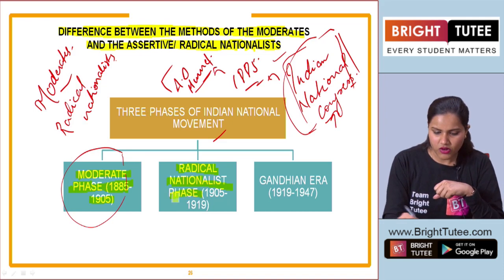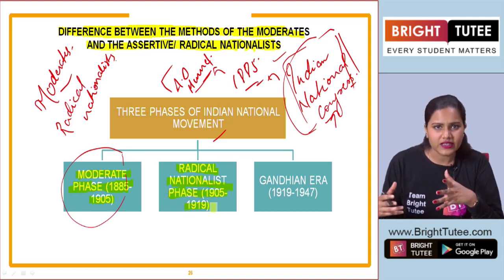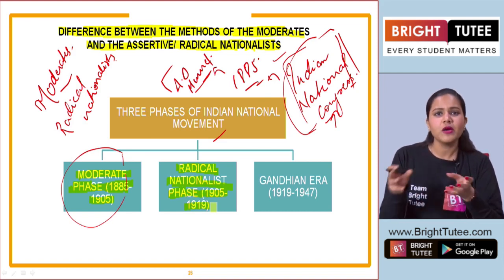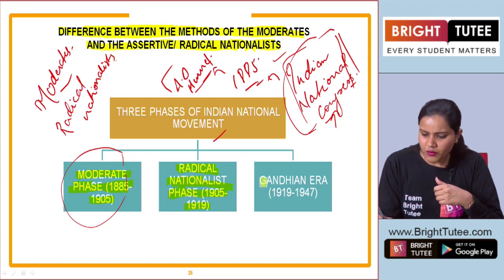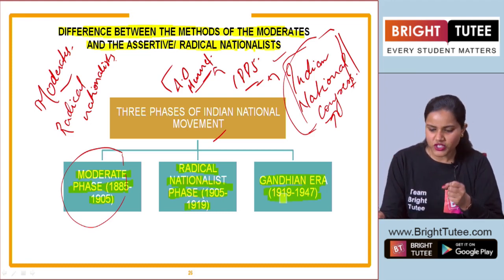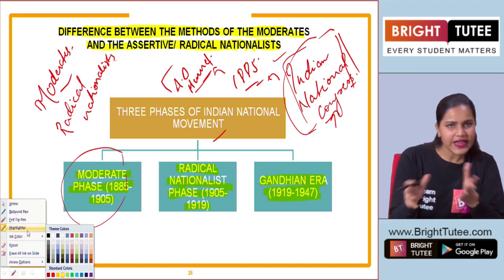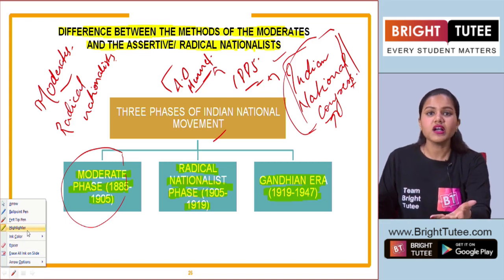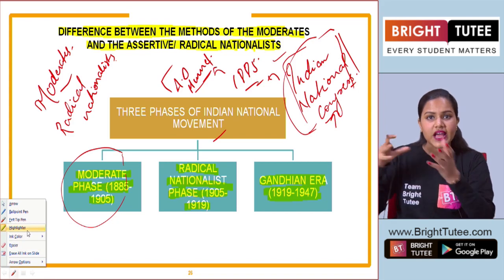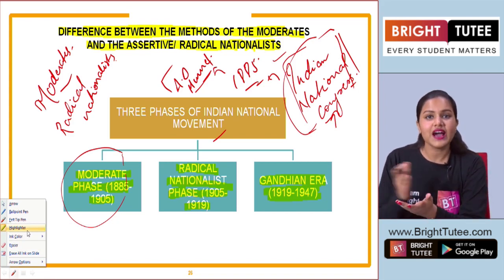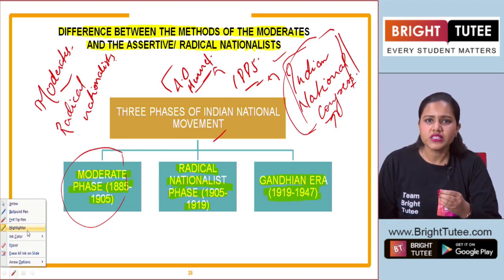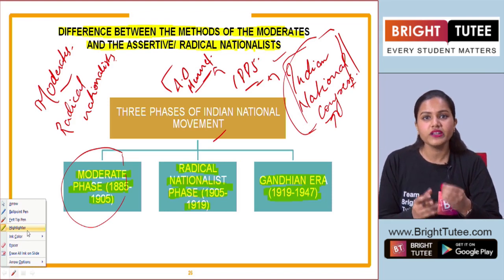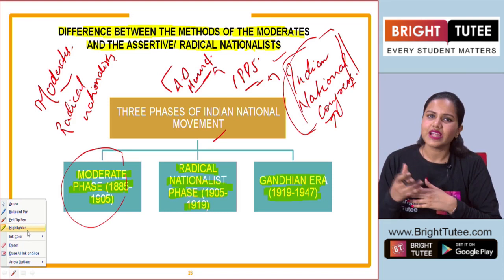The second phase is the radical nationalist or extremist phase, from 1905 to 1919. Then we have the Gandhian era, from 1919 to 1947. Around 1916-1917, when Mahatma Gandhi came to India, the Gandhian era began. Gandhi ji led the masses and became the supreme leader, leading movements such as the Non-Cooperation Movement, Civil Disobedience Movement, Rowlatt Satyagraha, and so on.